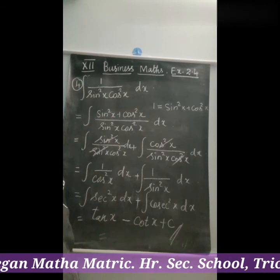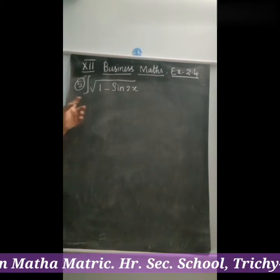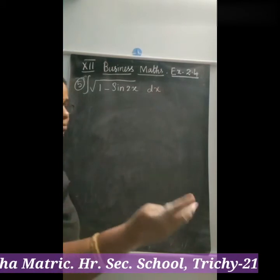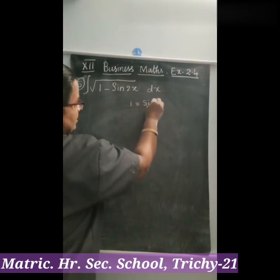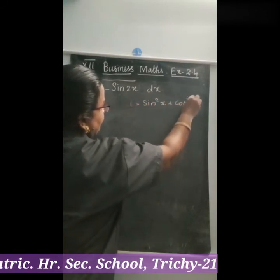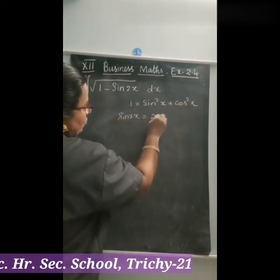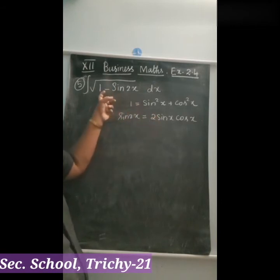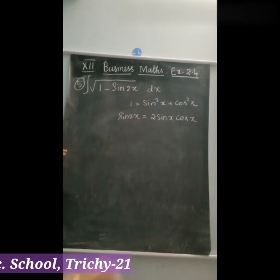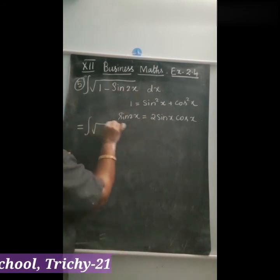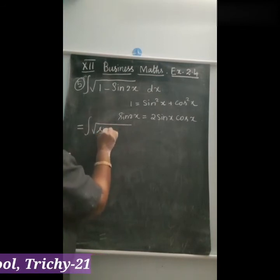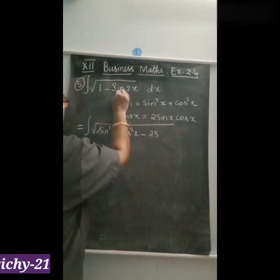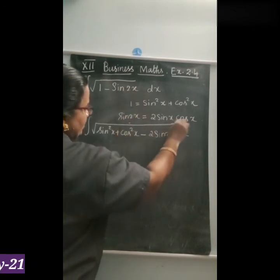Okay students, can you understand? Let us see the fifth question: integral of root of (1 minus sin 2x) dx. We use two formulas: 1 equals sin²x plus cos²x, and sin 2x equals 2 sin x cos x. Substituting: integral of root of (sin²x plus cos²x minus 2 sin x cos x) dx.